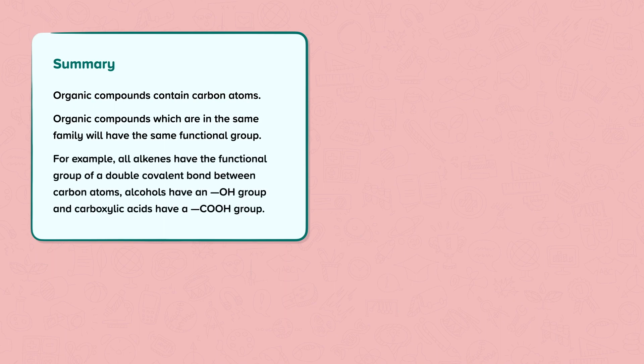For example, all alkenes have the functional group of a double covalent bond between carbon atoms. Alcohols have an OH group, and carboxylic acids have a COOH group.